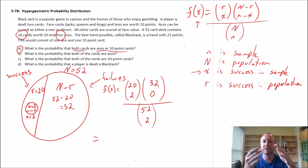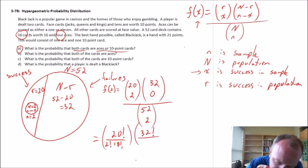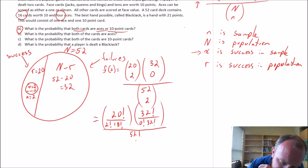So now let's rewrite this using the combinatorial notation. This is going to be 20 factorial divided by 2 factorial times 18 factorial. This is going to be 32 factorial divided by 0 factorial and 32 factorial divided by 52 factorial over 2 and 50. So what is this going to be?